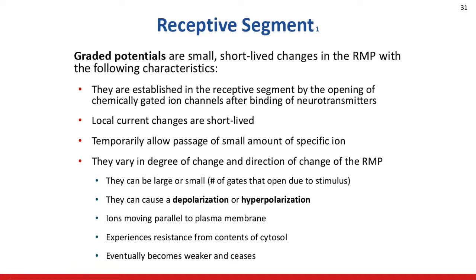This will be a very short, not long-lasting phenomenon. As those ions are flowing through, we're going to see a change in the resting membrane potential. Either it'll make the membrane potential more negative — we call that hyperpolarization — or it'll make the membrane potential more positive, less negative — we call that depolarization. These graded potentials will vary; they can be big or small, short-lived and local. What determines if it's big or small is the number of gates we have opened up. The more gates we open up, the more we're able to change that membrane potential.